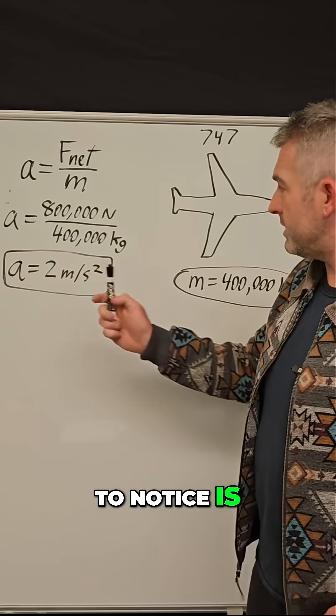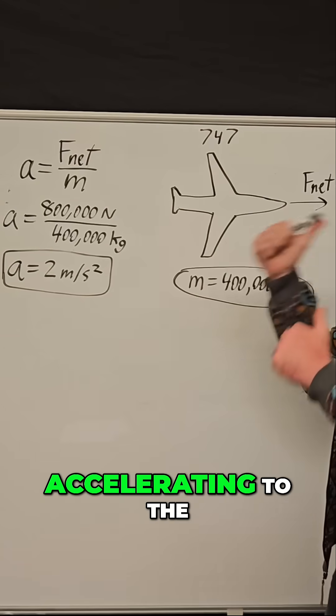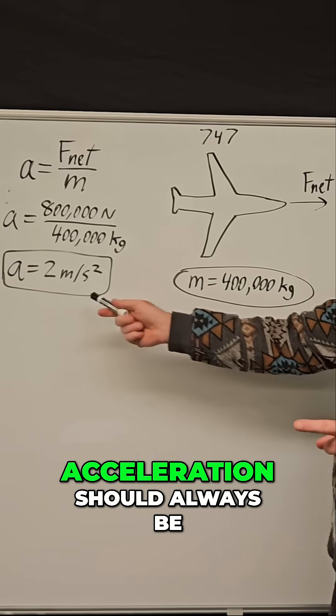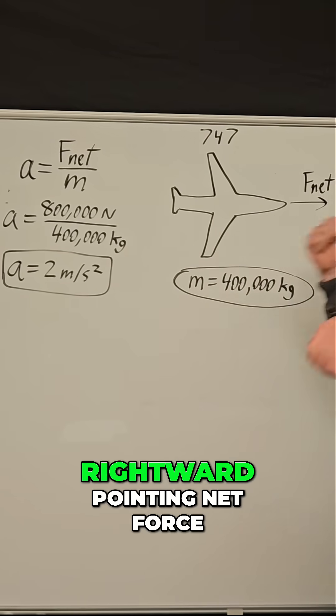One other thing to notice is the acceleration came out as a positive number, which means it's accelerating to the right, our positive direction. And remember how I said the acceleration should always be in the same direction as the net force. Because we have a rightward pointing net force, we of course get a rightward pointing acceleration.